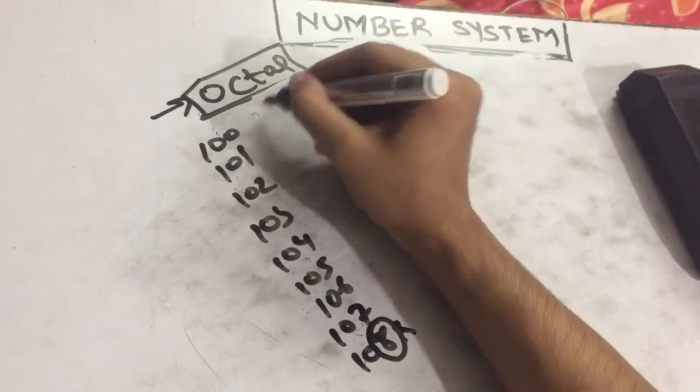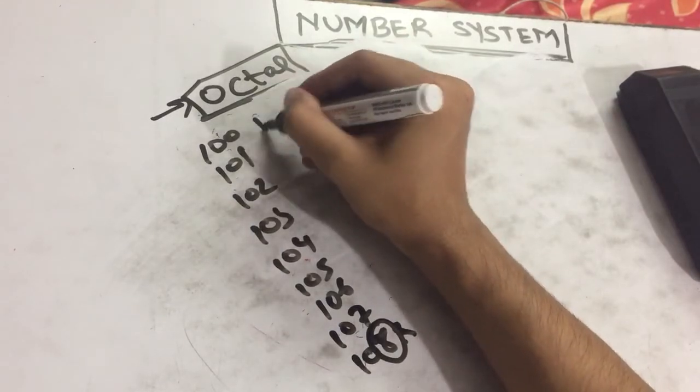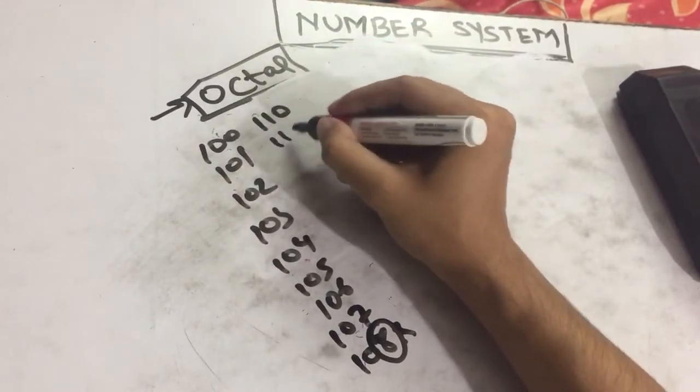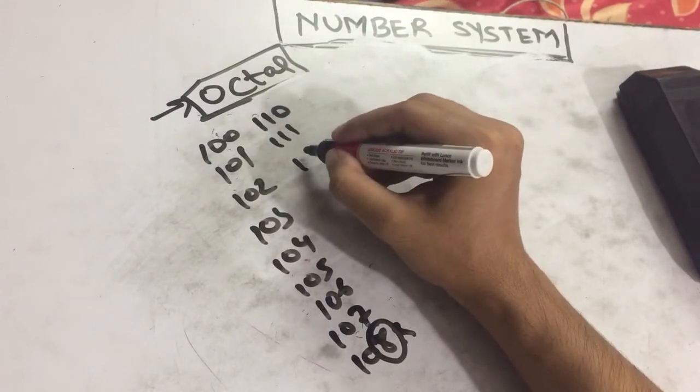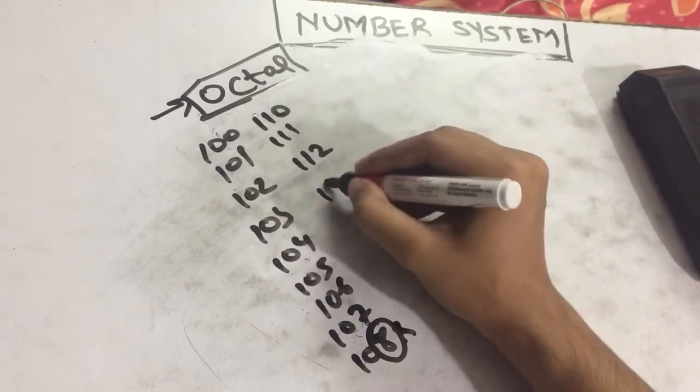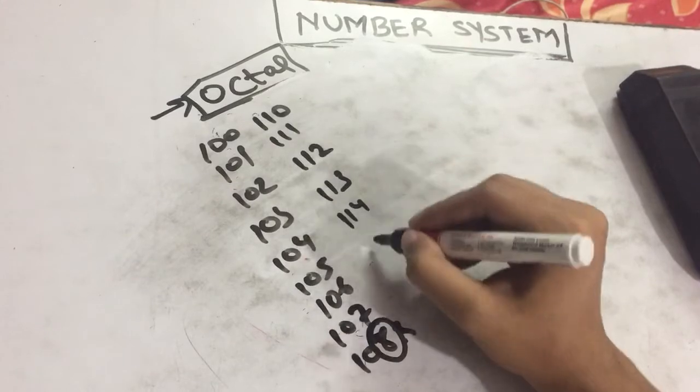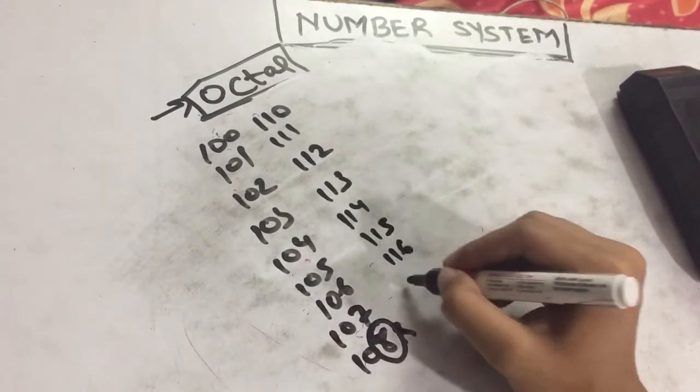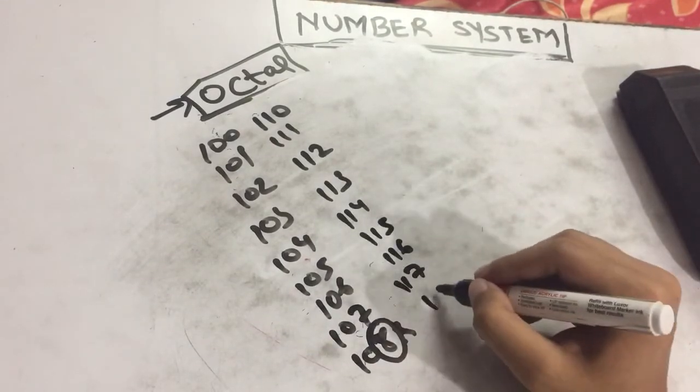We can't write 108 because it has 8, so we'll move to the next value. We can't write 108 because it has 8, so we'll move to the next value.